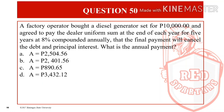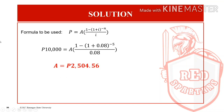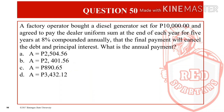For question number 50, a factory operator bought a diesel generator set for P10,000 and agreed to pay the dealer a uniform sum at the end of each year for 5 years at 8% compounded annually, so that the final payment cancels the debt with principal and interest. What is the annual payment? The cash price is P10,000. Using ordinary annuity: P10,000 = A × (1 − (1 + 0.08)^(−5)) / 0.08, giving A = P2,504.56, letter A.